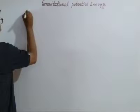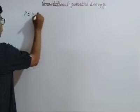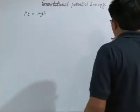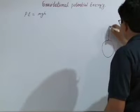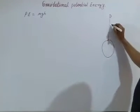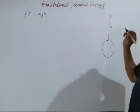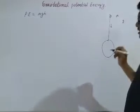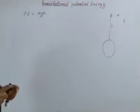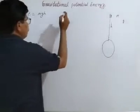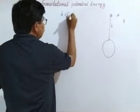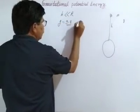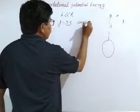The formula for gravitational potential energy studied last year is equal to mgh. When we throw any object from the surface of the earth to some height, where mass is m, acceleration due to gravity is g, and height is h, the potential energy equals mgh. This applies when the value of h is very very small compared to R, and at this time the value of g is constant at 9.8.